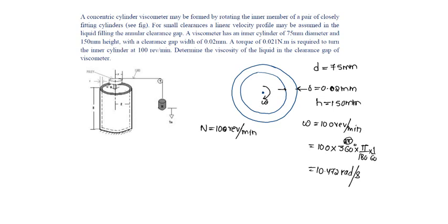Then omega will be 2πN by 60. Substituting 2π times N is 100 by 60, it will be 2π times 100 by 60, which equals 10.472 radians per second.